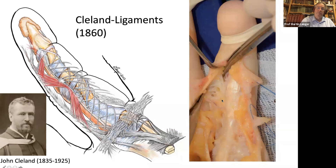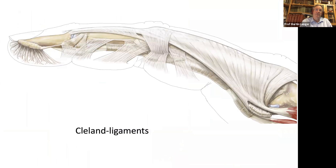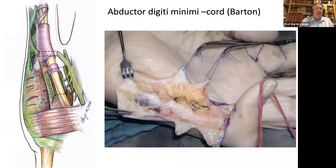More distally, beginning at the PIP joint, you have the Cleland's ligaments, first described by John Cleland in 1860. These are diagonal fibers, and they are always — if you are operating on Dupuytren's disease from the palmar side — lying dorsal to the nerve and dorsal to the vessels. They are connected to the skin. You can see the Cleland's ligament on the lateral side of the fingers connecting to the skin, with several portions of these small fibers.